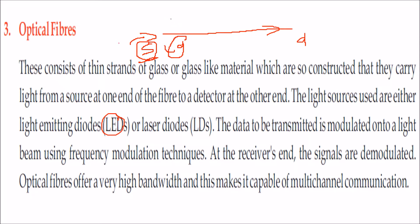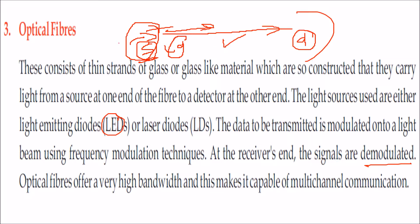The data to be transmitted is first modulated onto light, using various frequency modulation techniques. Only light passes through the fiber. At the receiver end the signal is again demodulated. Optical fibers offer very high bandwidth, which makes them capable of multichannel communication.